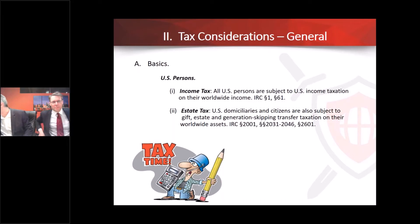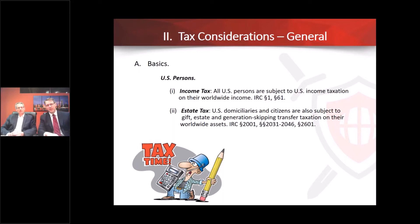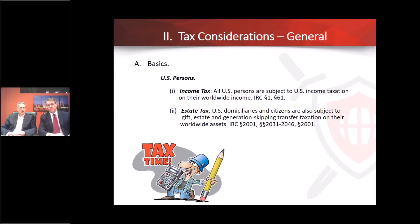From the basis of income tax, we obviously have two areas of the code: Subtitle A — income tax — and Subtitle B — estate tax or transfer tax. For all U.S. persons, all income worldwide is taxed for income taxes if you're a U.S. person or a U.S. resident. The same thing with the estate tax: if you're domiciled here, either long-term resident or not, we have the estate tax, gift tax, and GST tax on worldwide assets. So it's pretty simple if you're a U.S. resident, permanent resident, or a U.S. citizen.